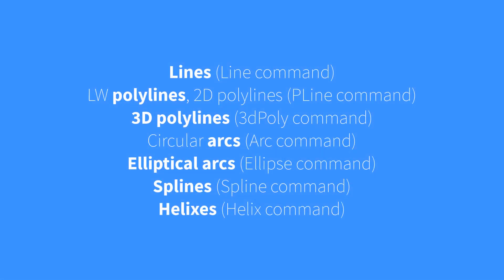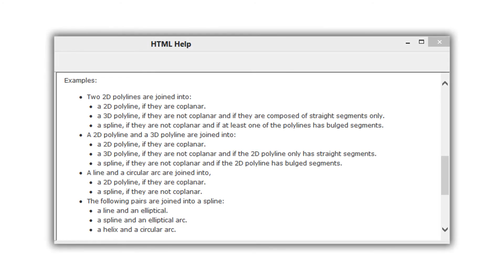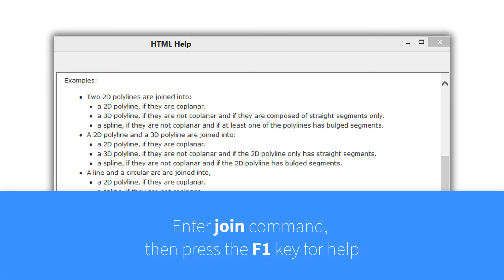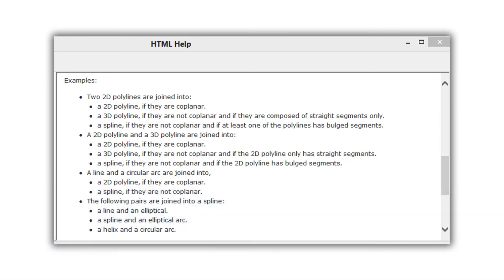The entity types that the JOIN command can work with are: lines, polylines, 3D polylines, arcs, elliptical arcs, splines, and helixes. When joining two different entity types, things get more complex. To access detailed help, type JOIN at the command prompt and press F1 to bring up the help documentation, which includes examples of what happens when entities differ or are not co-planar.